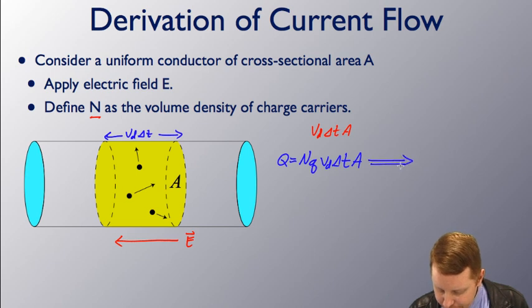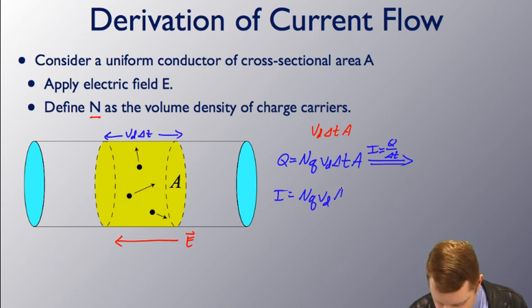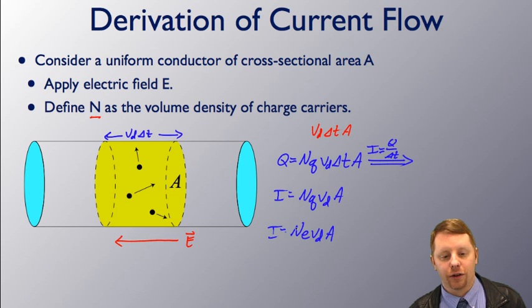Now we want this volume. That's going to be the drift velocity times delta t times the area. But we also know that current flow is going to be our q over delta t. So, if we take delta t over to this side, the left hand side becomes current, and we get i equals n q v_d A. Or if you prefer, i equals n e v_d A, where e and q are both the charge on an electron.